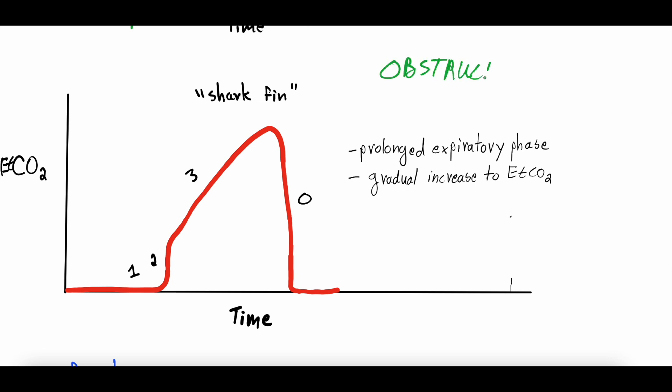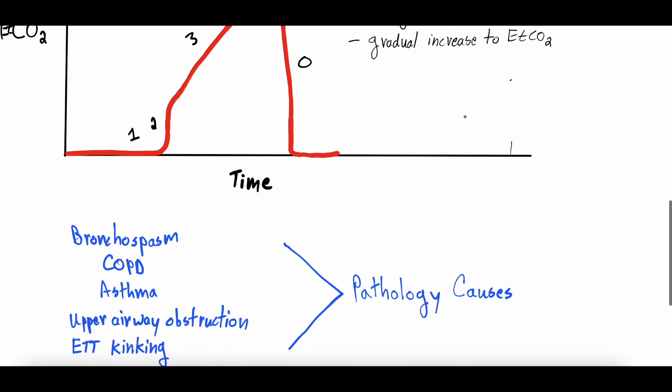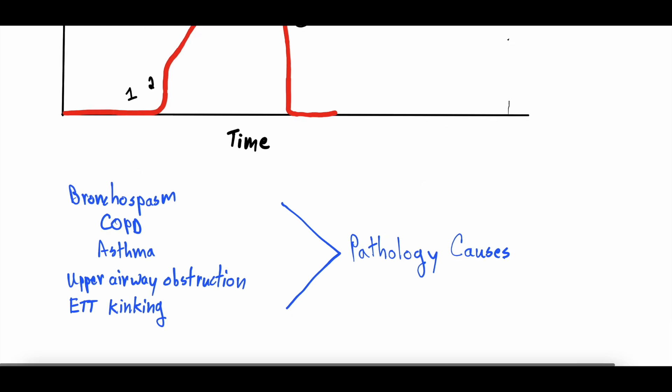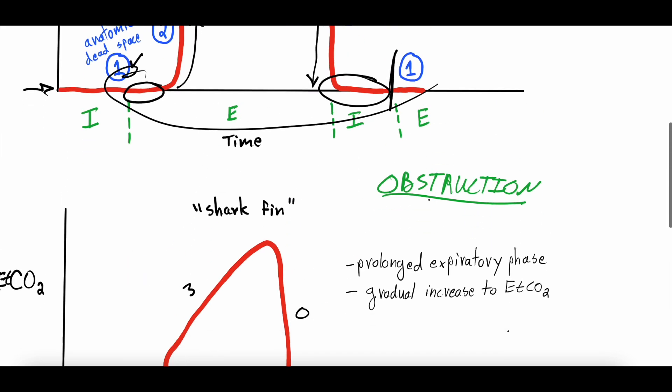And obstruction is any pathophysiology that's going on that causes some degree of airway obstruction. So it could be bronchospasm, where small airways are spasming. It could be COPD or emphysema, where we have obstruction in the small airways. It could be asthma, which is also a form of obstruction in the small airways. It could be upper airway obstruction. It could be kinking of an endotracheal tube. Anything that leads to a degree of obstruction when we're expiring can lead to this abnormal end-tidal waveform.